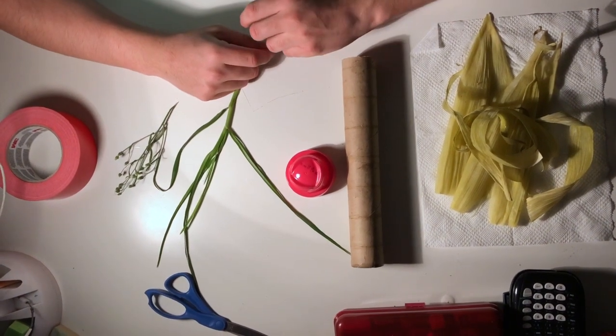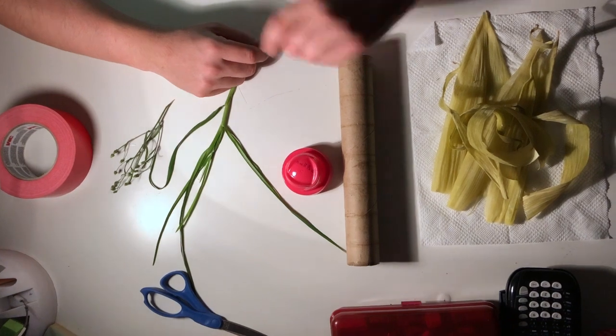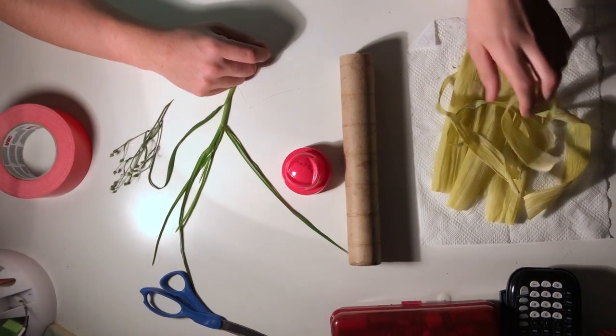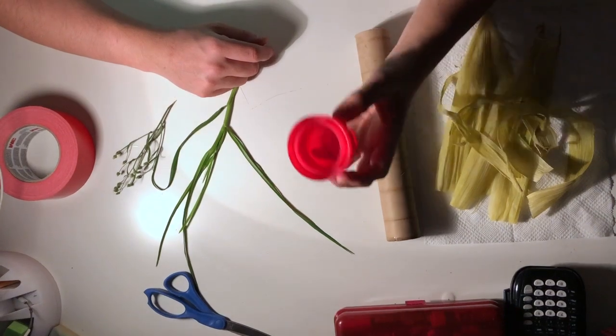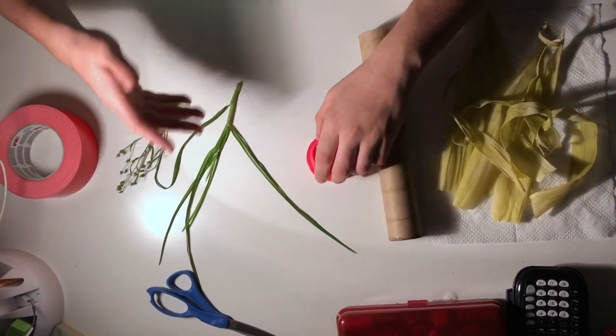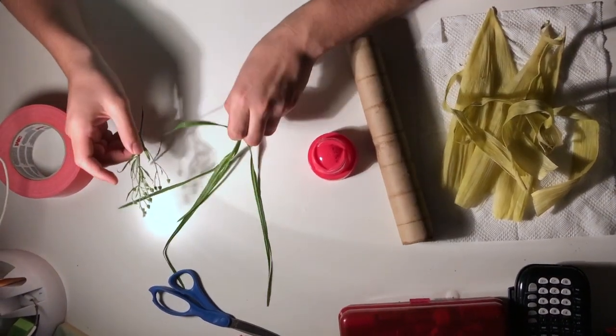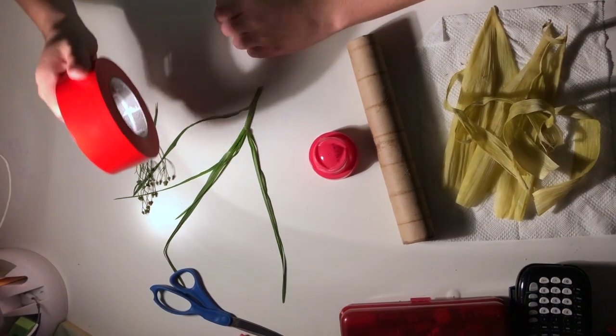The items I will be using consist of corn husk, a cardboard tube, a laundry detergent cap, plants found in my backyard, and some handy tape.